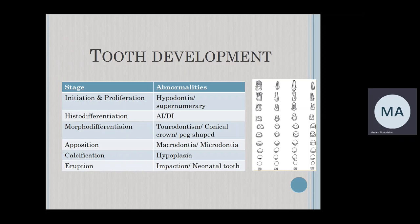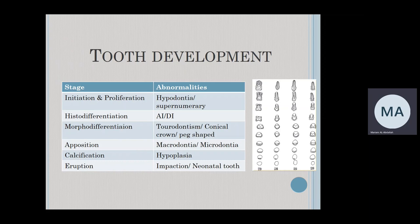At the initiation and proliferation stages, anything going wrong can lead to hypodontia — a complete absence of the tooth, or tooth agenesis — or the opposite, a supernumerary tooth. At the histodifferentiation stage, problems can lead to amelogenesis imperfecta or dentinogenesis imperfecta. At the morphodifferentiation stage, shape abnormalities can occur, like taurodontism, a conical crown, or peg-shaped lateral incisors. At the apposition stage, abnormalities can lead to macrodontia or microdontia. At the calcification stage, problems can lead to hypoplasia, and at the eruption stage, we might end up with impaction or a neonatal tooth.